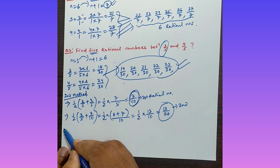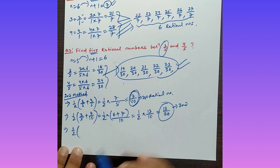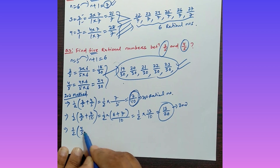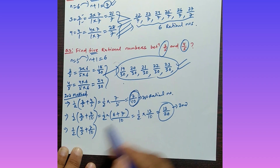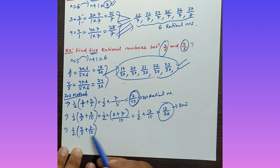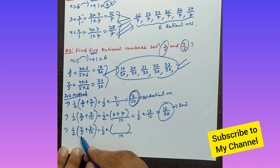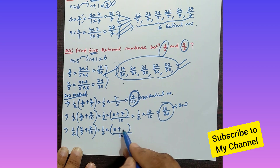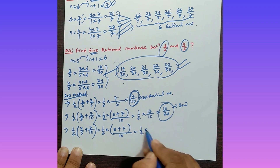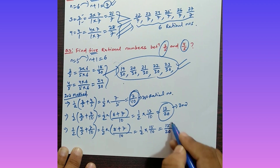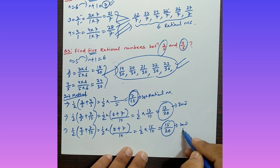For the third rational number, apply the same procedure between 4/5 and 7/10. Take (1/2) × (4/5 + 7/10). LCM is 10: (1/2) × ((8 + 7)/10) = (1/2) × (15/10) = 15/20. So 15/20 is the third rational number. Continuing this same logic, you can find the fourth and fifth rational numbers.